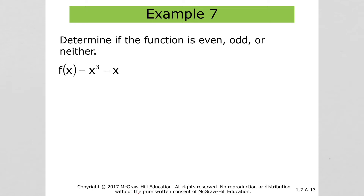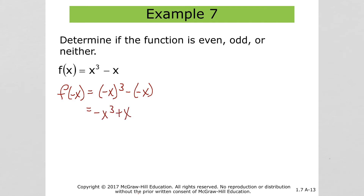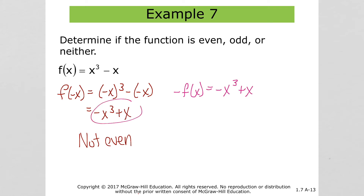For this next function, f(-x) is negative x³ minus negative x, which equals negative x³ plus x. That's not the same as the original, so we are not even. Then negative f(x) would be negative x³ plus x. That matches f(-x)! So this function is odd.